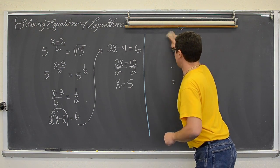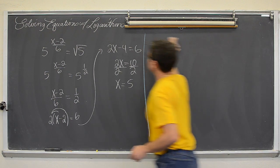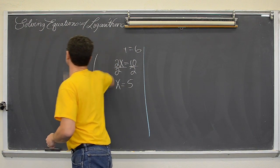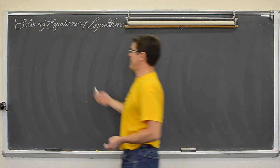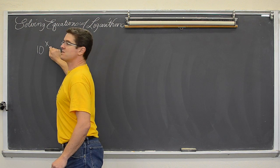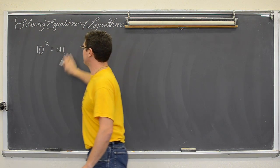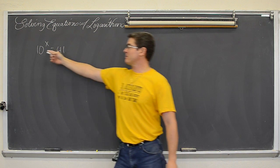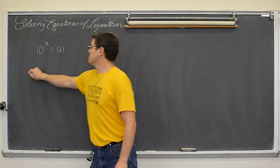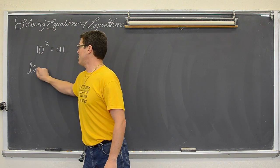So my next example that I want to take a look at is... I have a base of 10. So 10 to the x equals 41. Now for this one, my notation I would want to use common log because we have a base of 10. So if I apply the common log to both sides,